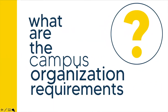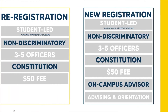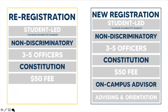Before registering your campus organization, it is important to first understand what the requirements are. There are differences in requirements for re-registering organizations and new organizations. All campus organizations, both re-registering and new, must meet the following requirements. The organization must be student-led, meaning it is being directed and led by students of their own volition and willingness to operate an organization on campus. The students in the organization should be making all decisions on behalf of the organization.